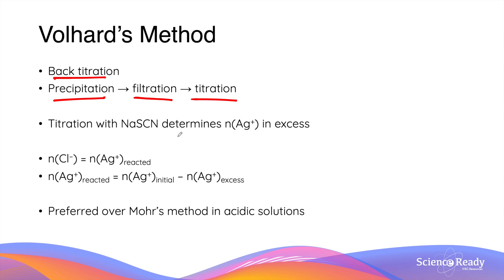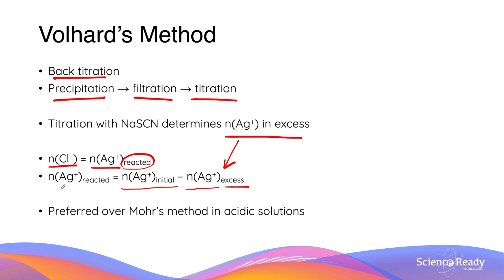Titration with sodium thiocyanate helps determine the number of moles of silver ions in excess. The number of moles of chloride ions equals the number of moles of silver ions that reacted in the precipitation reaction. This number can be calculated by first finding the total amount of silver ions at the very beginning — by multiplying the concentration of the solution by the volume added to the chloride ion solution — and then subtracting the number of moles of silver ions in excess from the titration with sodium thiocyanate. We can then calculate the concentration by dividing by the volume of the chloride ion solution.